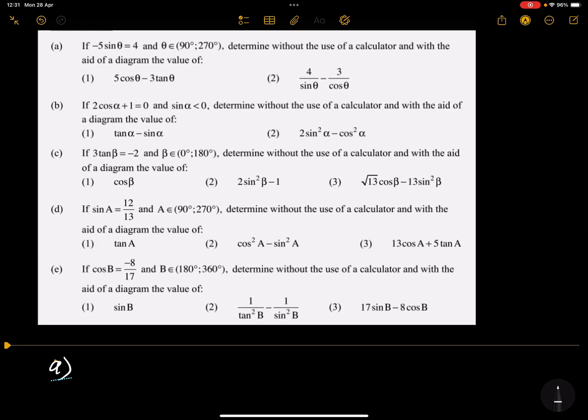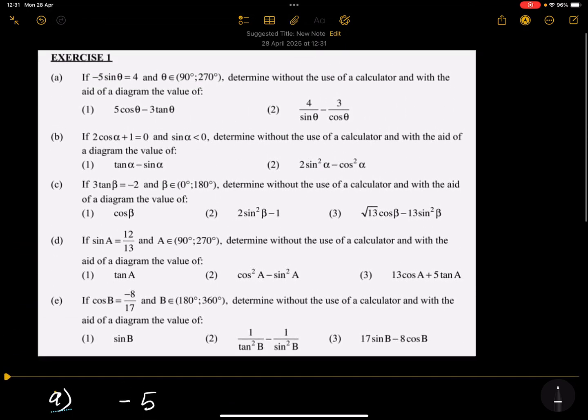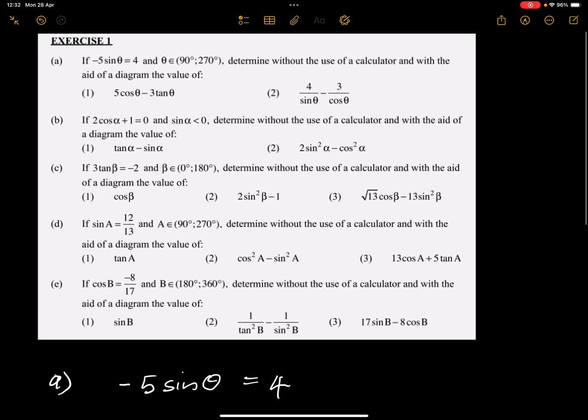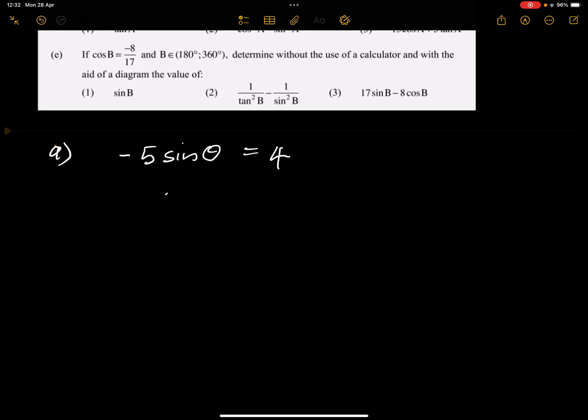We've got negative five sine of theta equal to four, and they've also told us that theta is an element of 90 to 270 degrees. So we said the first thing is that we're supposed to isolate the trig ratio. If we divide by negative five on both sides, we've got sine of theta equal to negative four over five.